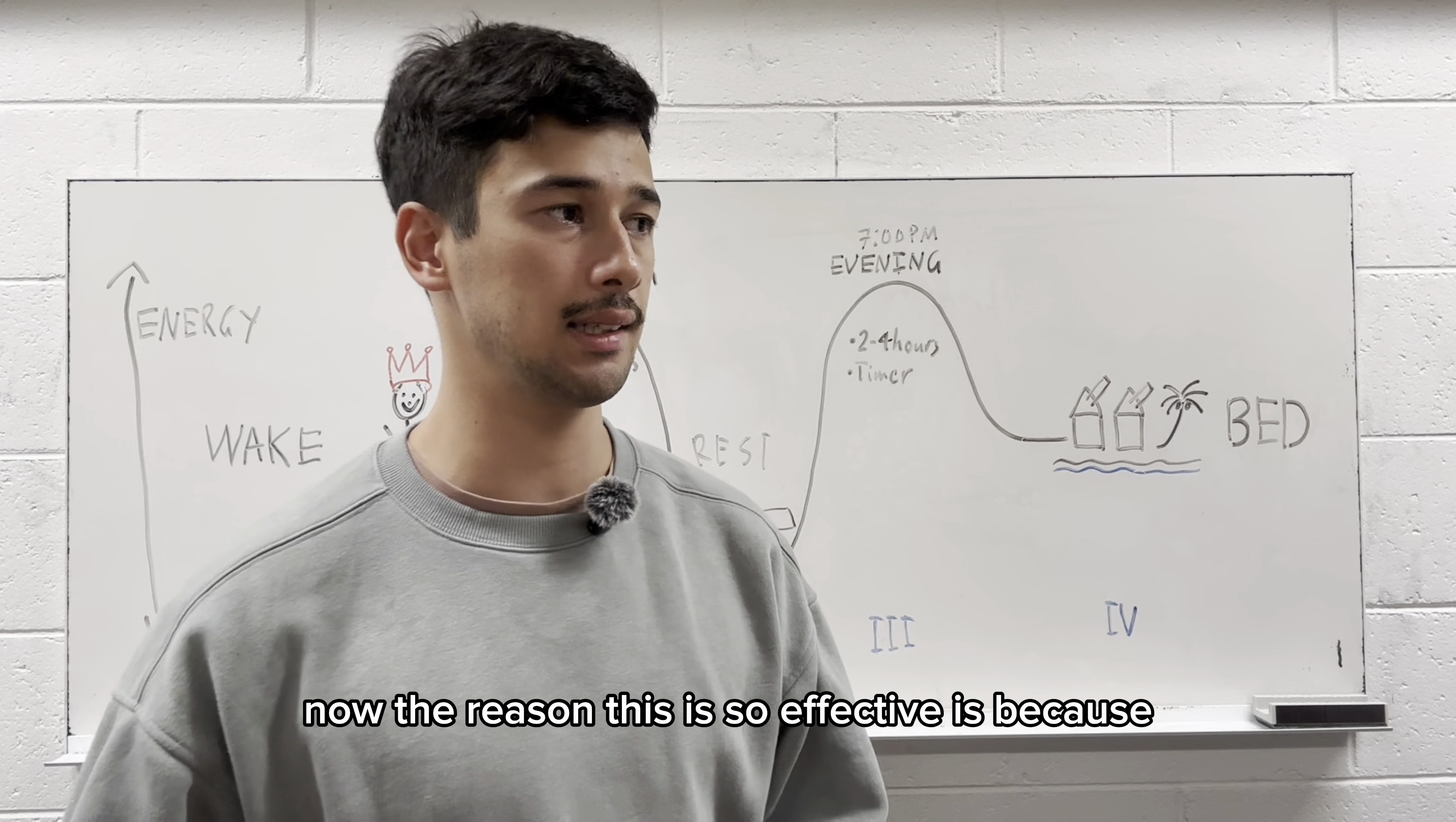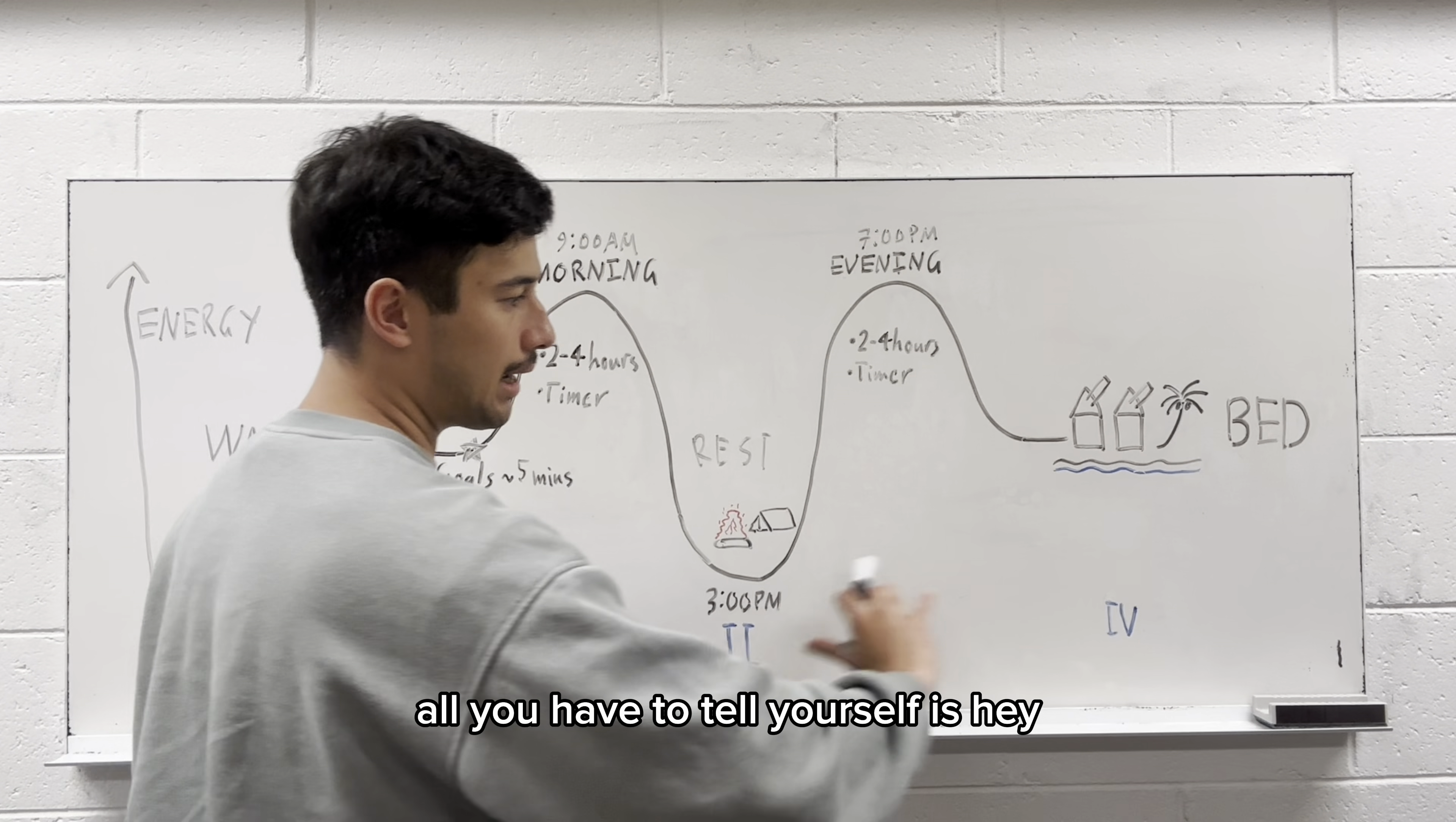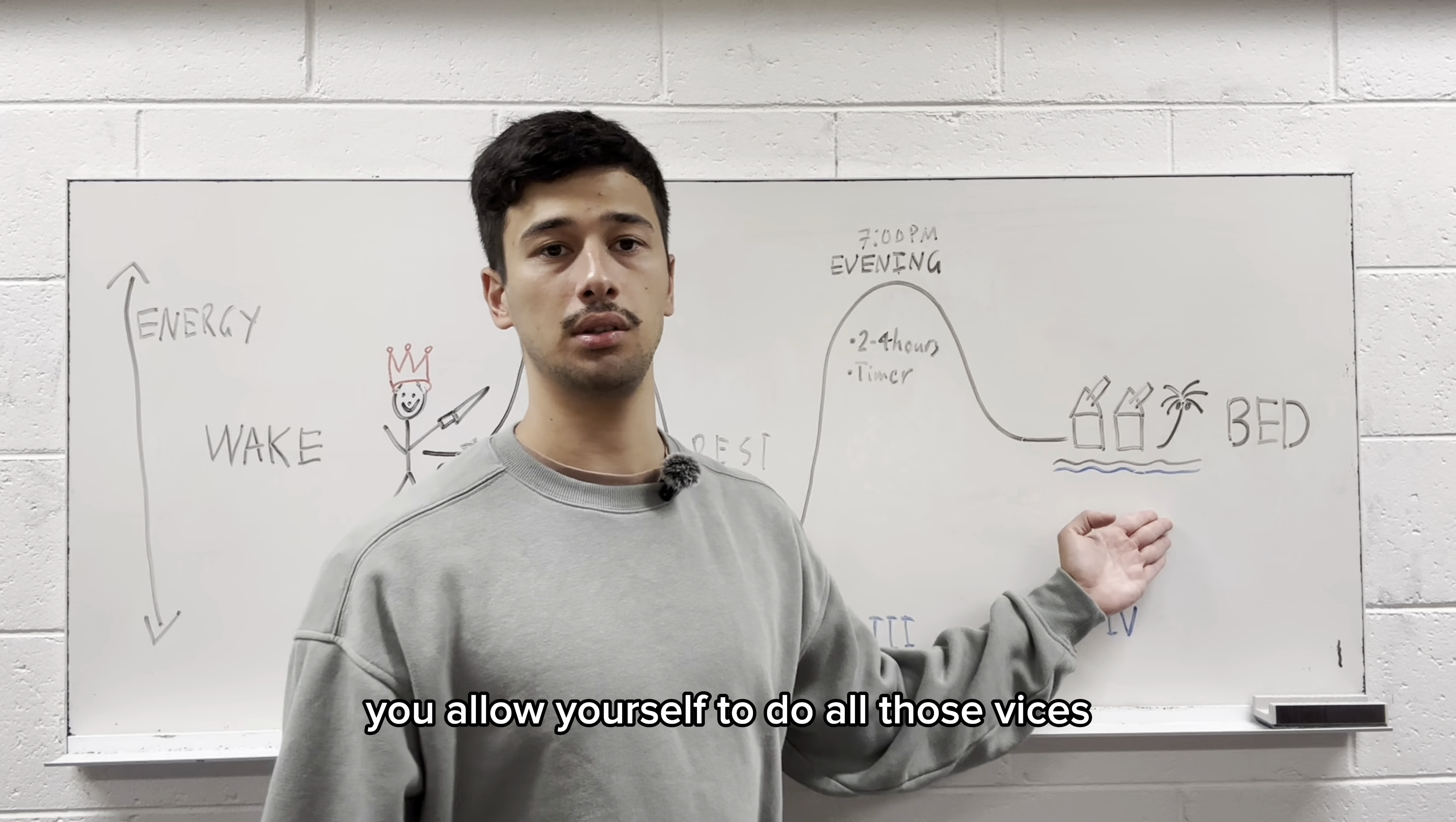Now, the reason this is so effective is because instead of resisting for three weeks, all you have to do is resist till nighttime. So you're going to be tempted here to go on Netflix. You're going to be tempted here to go on YouTube. All you have to tell yourself is, hey, just do that at night. And the reason it's called a release period is because it's like during the day, you're building up that pressure. You're fighting all these cravings. And then here you literally release that pressure. You allow yourself to do all those vices.